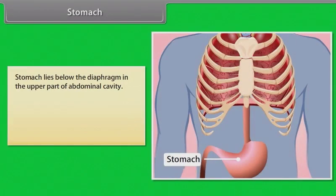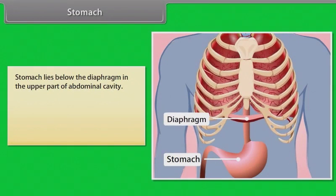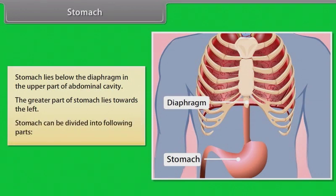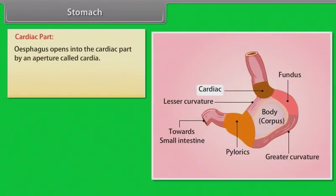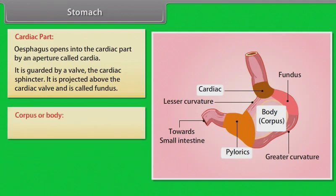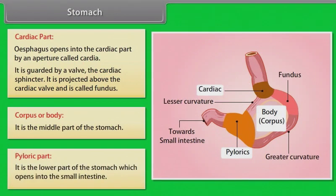The stomach lies below the diaphragm in the upper part of the abdominal cavity, with the greater part towards the left. The stomach is divided into the following parts: the cardiac part, where the esophagus opens via an aperture called the cardia, guarded by the cardiac sphincter; the fundus, projected above the cardiac valve; the corpus or body, which is the middle part; and the pyloric part, the lower part which opens into the small intestine.